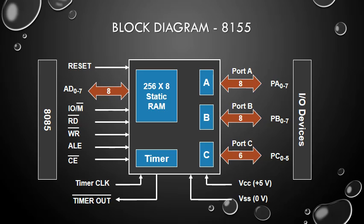The input/output section includes two 8-bit parallel input/output ports — Port A and Port B — one 6-bit Port C, and a timer. All the ports can be configured simply as input or output ports.